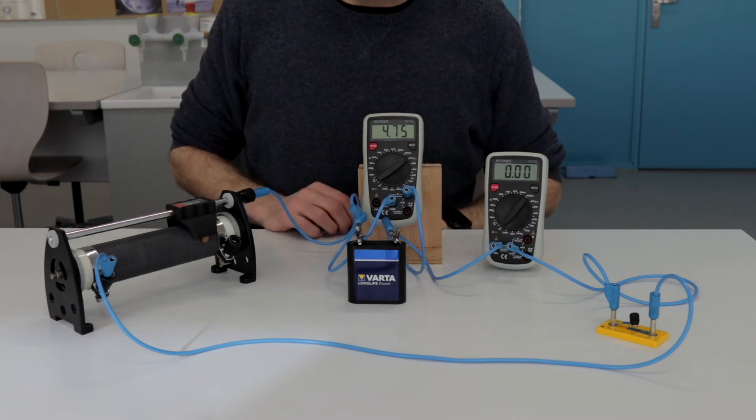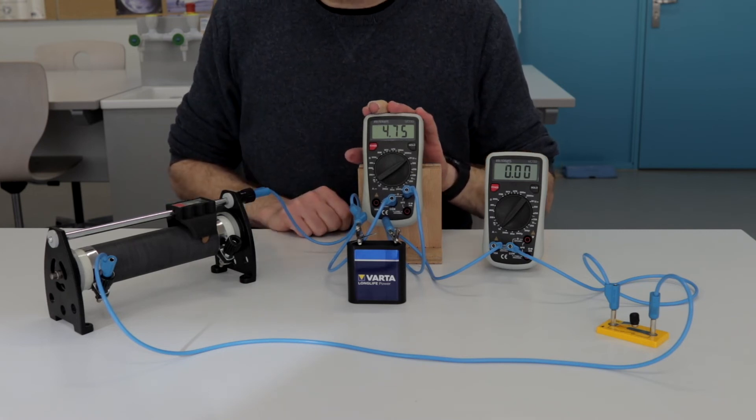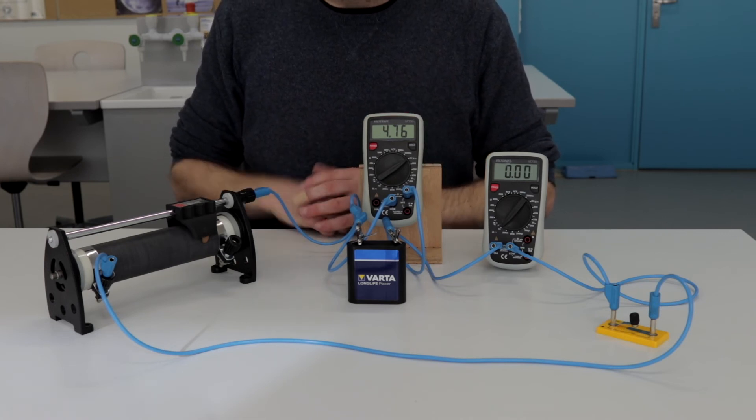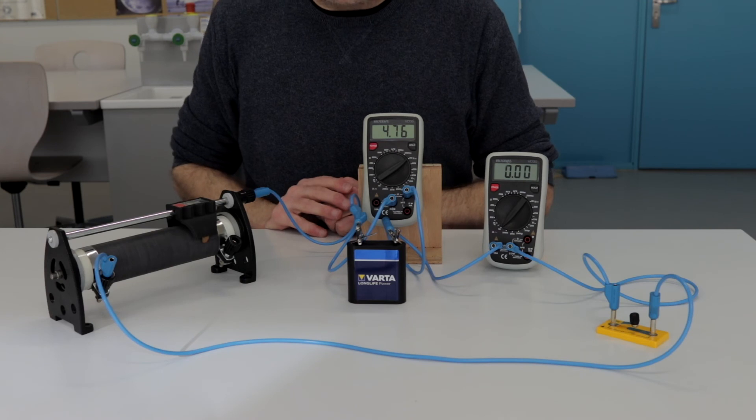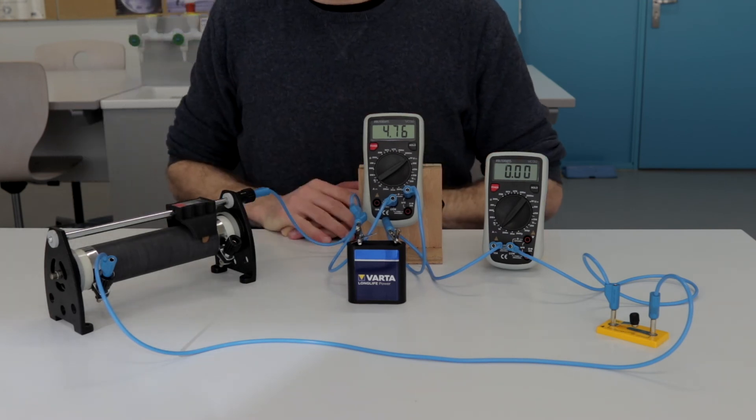For any practical purposes, this reading of the voltage when the battery is not part of the circuit is the value of the EMF for this battery. On the label is actually written 4.5 volts. This is 4.76, but is reasonably close.